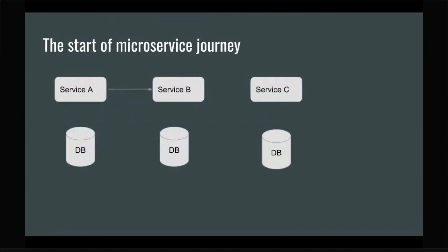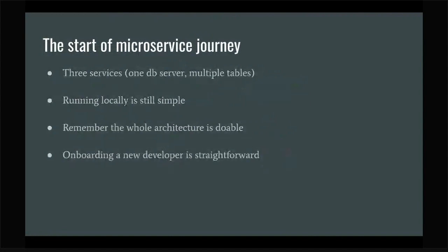Usually you have service A communicating with service B, communicating with the database. B communicates with C, and maybe even A communicates with C. The communication is quite simple. You don't have a lot of things to worry about. Understanding your whole architecture is doable — you can easily go to a whiteboard and draw it. Onboarding a new developer isn't something very complicated.